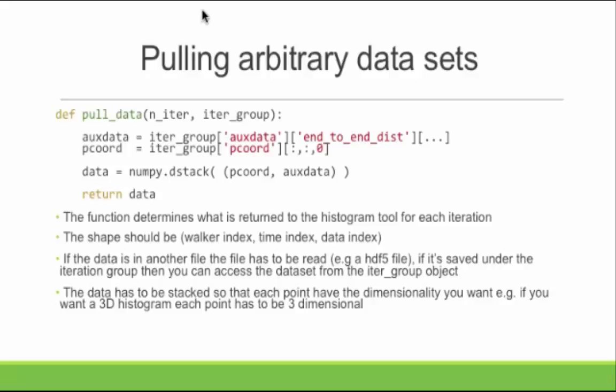Adam has stored the end-to-end distances named a particular way, automatically put into `ops_data_end_to_end`. I'm pulling the end-to-end distance data completely, and also taking the first dimension of the progress coordinate — the heavy atom RMSD. The data must be shaped properly: first the number of walkers/segment ID, second the time index, and the last dimension has the data. For two-dimensional data, it must be stacked together using `np.dstack`. To reach segment 5, time point 5, first dimension, you'd index this as [5, 5, 1].